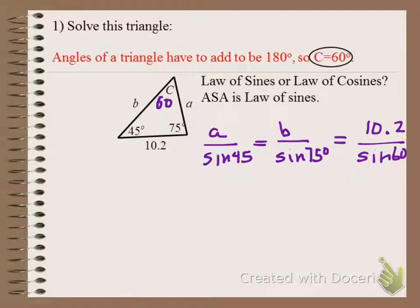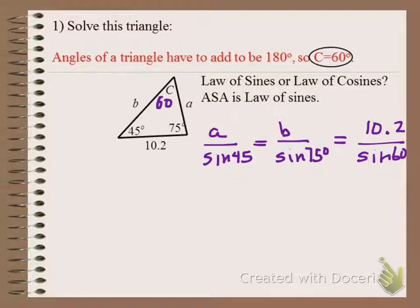Because I'm looking for sides, I'll use the configuration with the unknown in the numerator. It's a good idea when solving oblique triangles to always find the smallest piece first — side A, because it's across from the smallest angle of 45°. So I'll find A first.